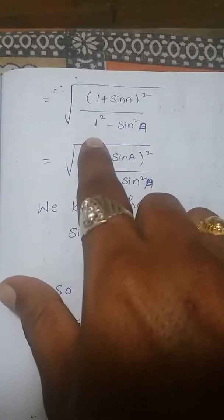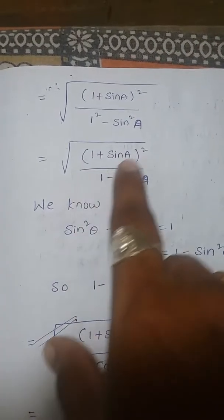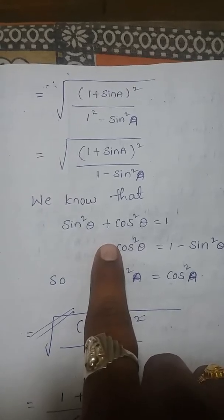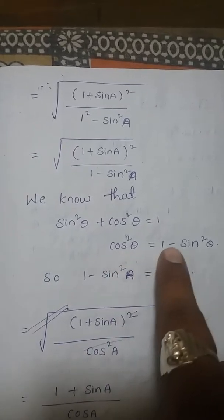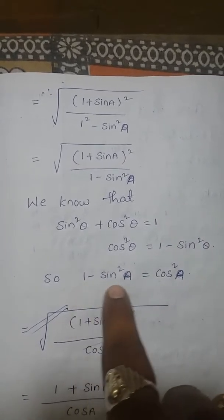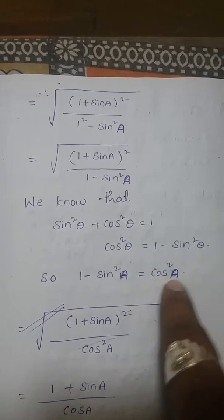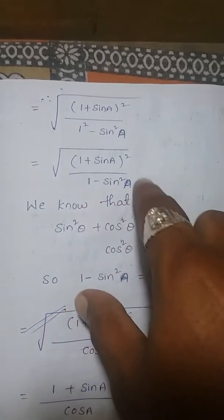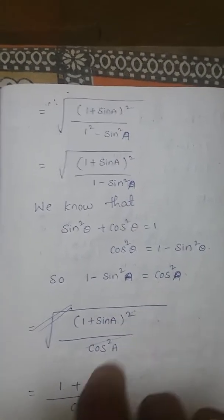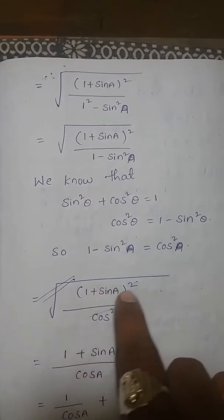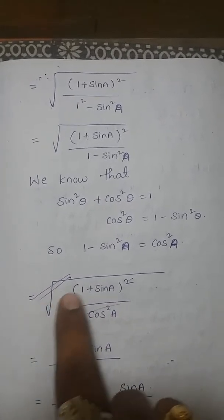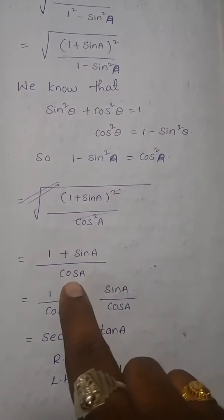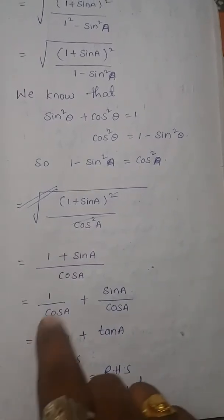This gives us √((1+sinA)²/(1-sin²A)). Using the trigonometric identity sin²θ + cos²θ = 1, we get cos²θ = 1-sin²θ. So 1-sin²A equals cos²A. Replacing 1-sin²A with cos²A, we have √((1+sinA)²/cos²A). The square and square root cancel for both numerator and denominator, leaving (1+sinA)/cosA.